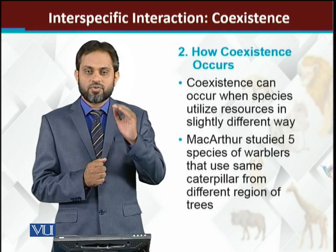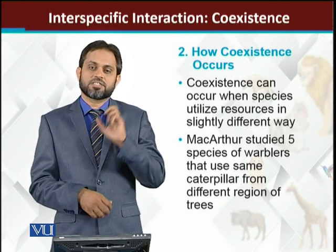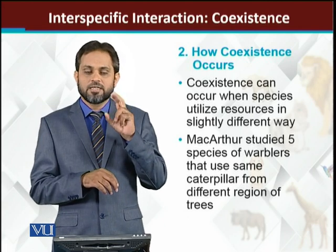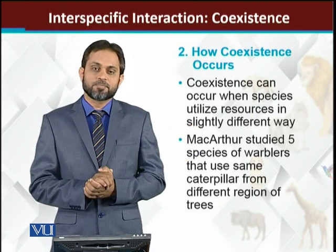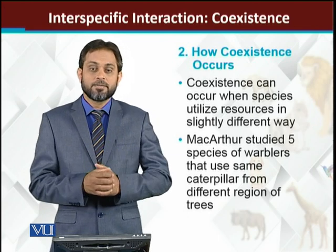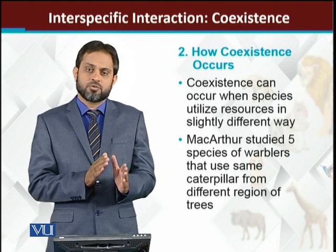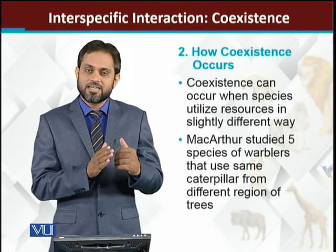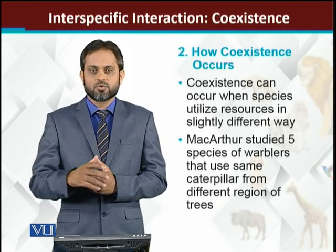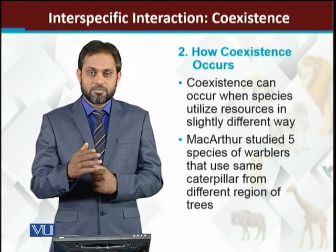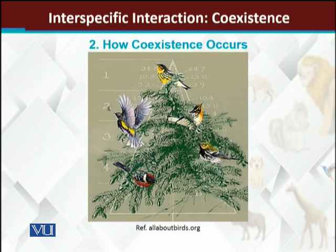He noticed that the five different species of birds are eating caterpillars at different positions of the tree. Some feed from the bottom, some from the middle, some from the top, and some from the side branches — different positions on the tree. Because of this, competition between them is reduced. What they have actually done is partition the resources. Species can co-exist if they partition the resources — dividing their regions. Where two boundaries overlap, competition will exist.